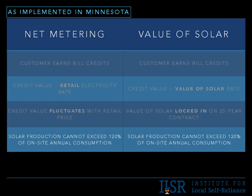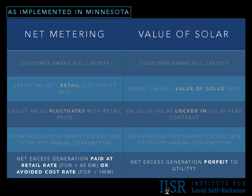The fourth comparison is actually a similarity: both under net metering and value of solar in Minnesota, solar production cannot exceed 120% of annual on-site consumption. You need to match your solar array to the load you've got, with 120% allowing for year-to-year fluctuation. Finally, regarding net excess generation — Minnesota recently upgraded its net metering statute from 40 kilowatts to a megawatt. Under the previous policy since 1981, projects up to 40 kilowatts got paid at the retail rate for any excess generation. For projects between 40 kilowatts and a megawatt, excess generation is now paid at the avoided cost rate.